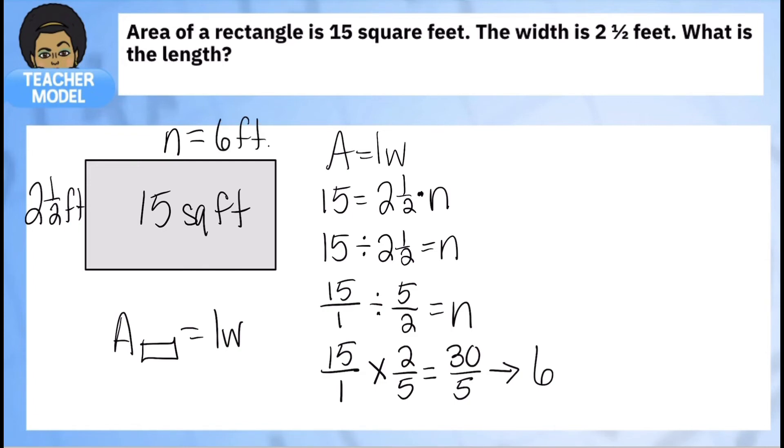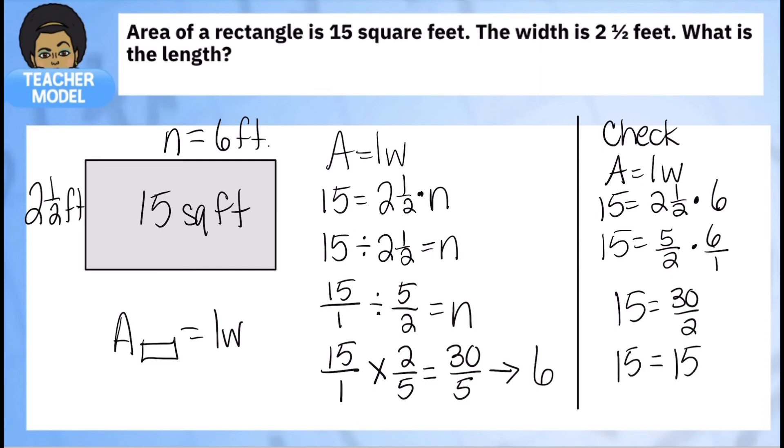And as always, we check our work. Let's draw a nice little line so we have it, and we're going to do a check using the same information. Area equals length times width, so 15 is equal to two and a half times 6. We're going to simplify this expression on the right side. So I'm going to multiply fractions. Let's turn them into fractions: 5 over 2 times 6 over 1, and you're going to get 30 over 2. 15 equals 30 over 2. Let's simplify that even more. 30 over 2 is the same as 15, so both expressions are true and we're correct. And that's how we use at least the area and one dimension to figure out the missing dimension.